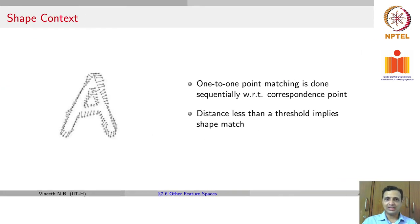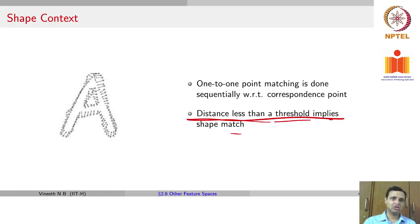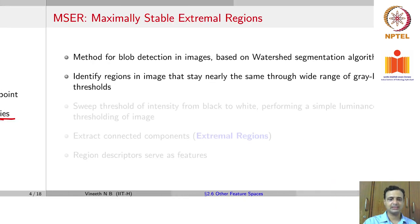The denominator ensures that you are also considering the number of pixels used during evaluation, very similar to how we spoke about normalized cut. The denominator helps in normalizing based on the number of pixels considered. Once you get these correspondence points between two images based on the representation, you do a one-to-one matching sequentially between them. When the distance is less than a threshold, this approach is used to check for a shape match — not just a point match, but matching shapes between two different images. That is the reason it is called shape context.